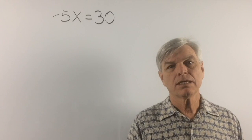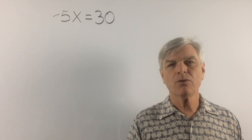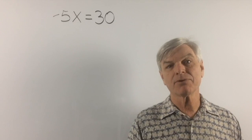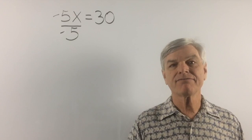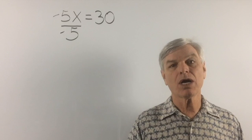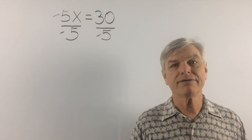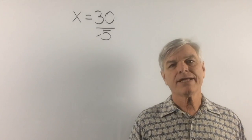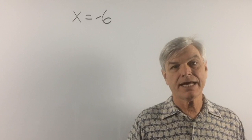Let's try another multiplication problem. Negative 5x equals 30. Our coefficient is negative. The rule is the same — whatever number you have in front of x, you divide by it. So we divide by negative 5. Because negative 5 over negative 5 equals 1. Dividing both sides by negative 5, we get x alone. 30 divided by negative 5 is negative 6. And x equals negative 6.